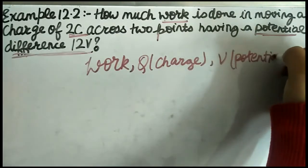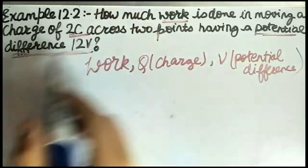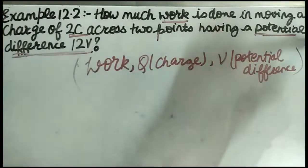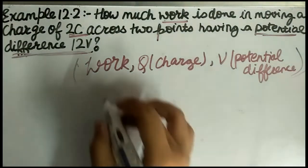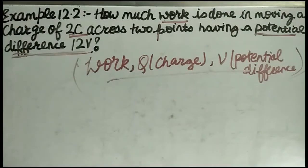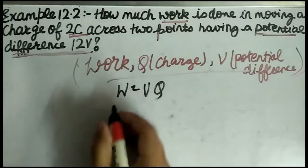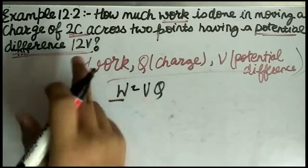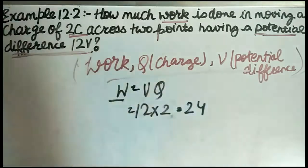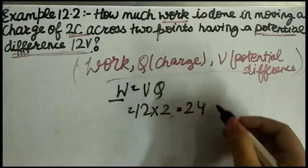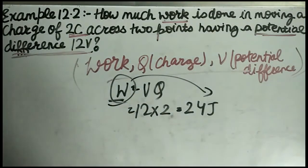The relation between work, potential difference, and charge is W = V × Q. So W = 12 × 2 = 24 joules. Work is measured in joules, so our answer is 24 joules. Now let us move to the next question.